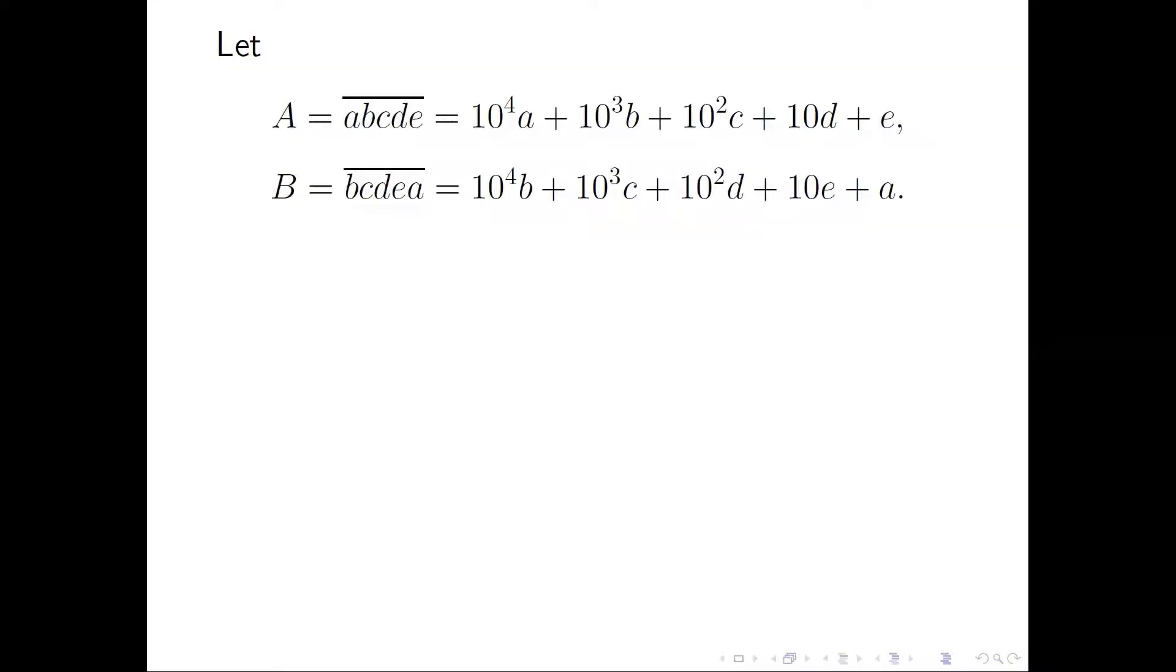Our first job is to express the five-digit numbers in terms of decimal expression. In other words, let A be the five-digit number ABCDE, then it is 10000A plus 1000B plus 100C plus 10D plus E. We move the first digit A to the last position. We get B equals 10000B plus 1000C plus 100D plus 10E plus A.